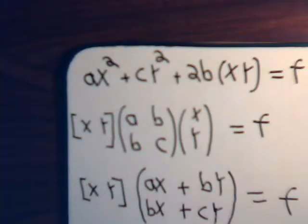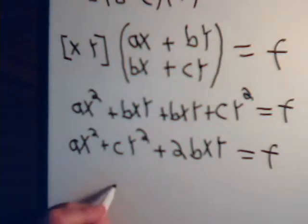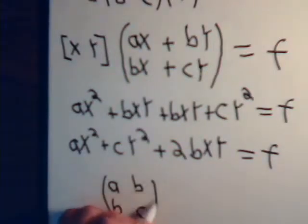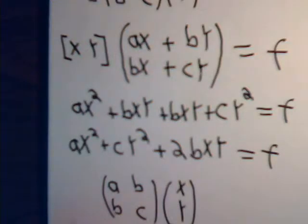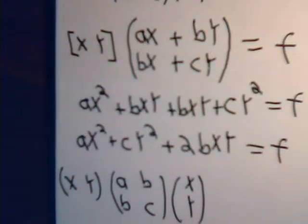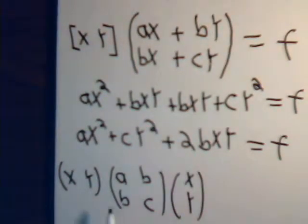And if we call this, let's write it down here. So we have A, B, B, C, column vector xy times row vector xy. Notice this matrix is symmetric, and we'll take advantage of that in future videos.